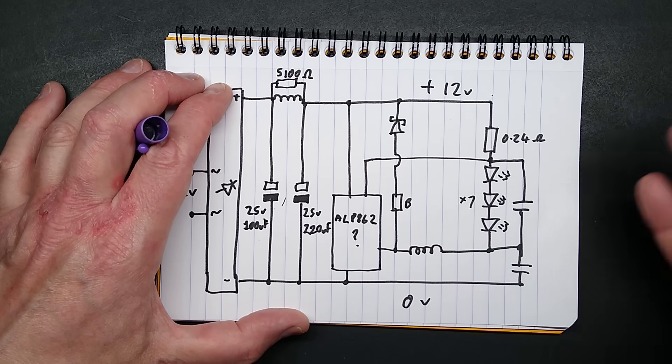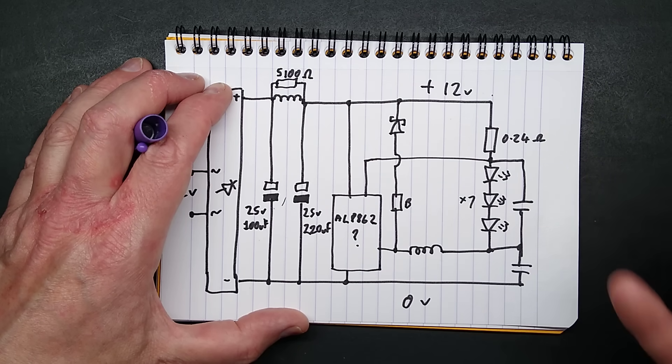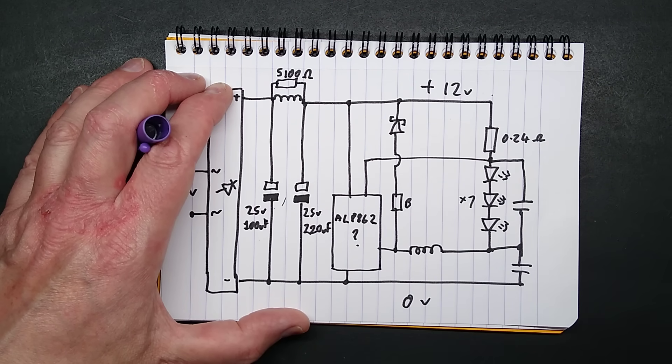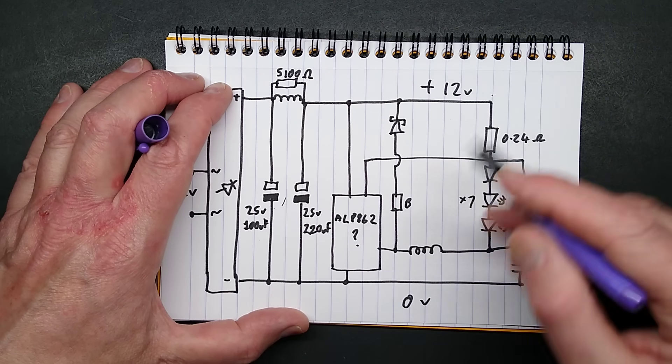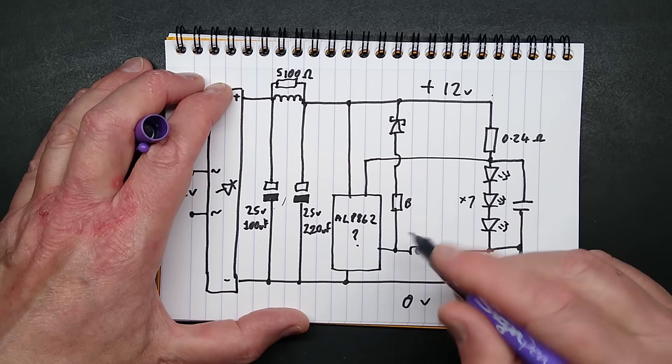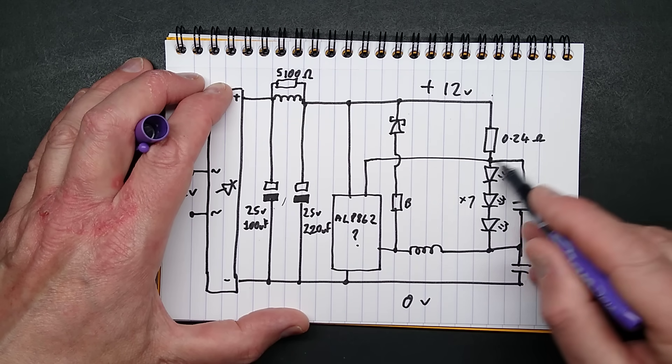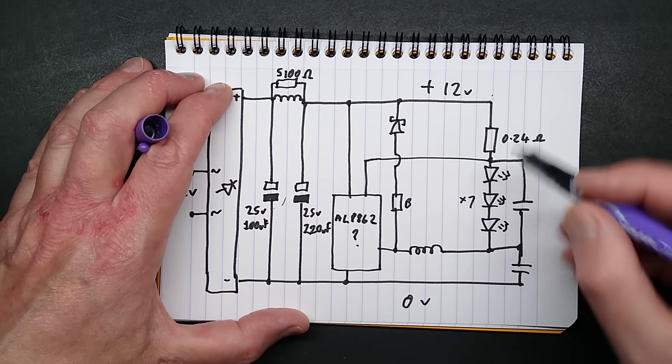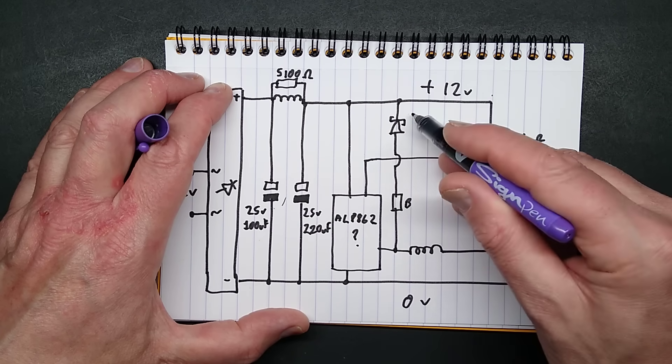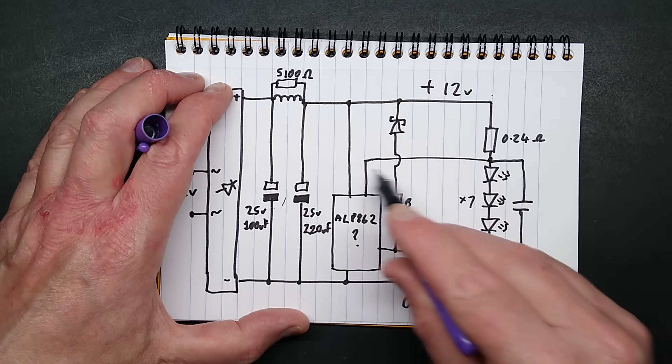There's the mystery B component. I do not know what that is at all. If you have any ideas, leave a message down in the comments. Once the current, well the current is set by this 0.24 ohm resistor, as soon as it reaches a specific level that measures the voltage between the positive rail and this point.